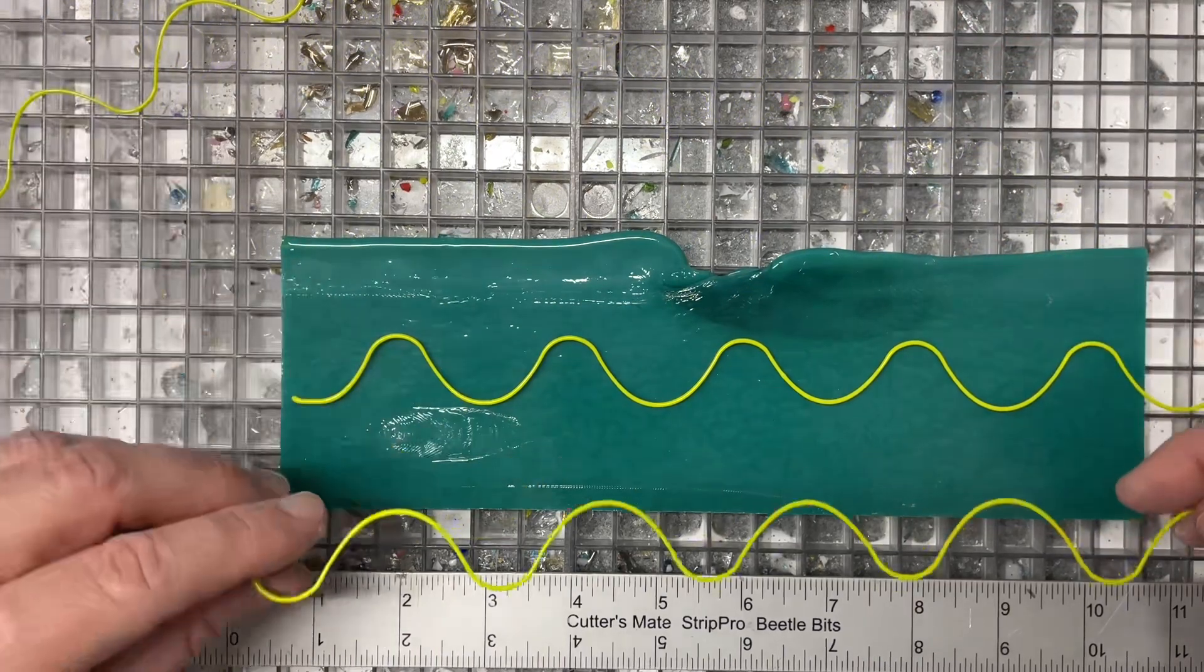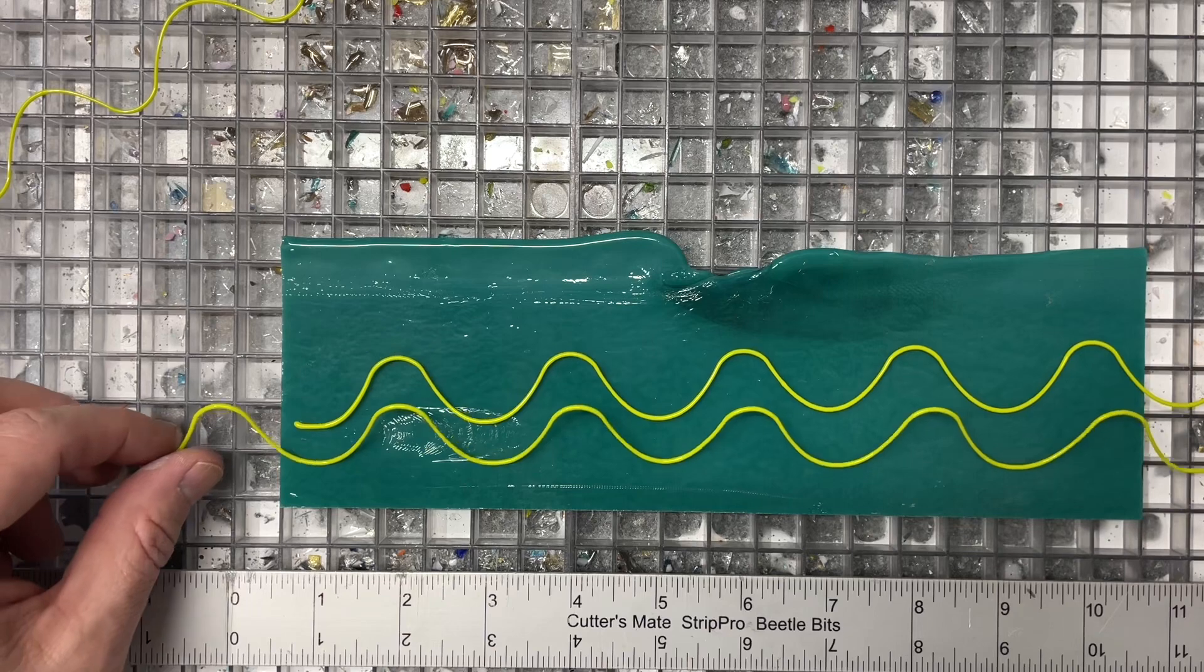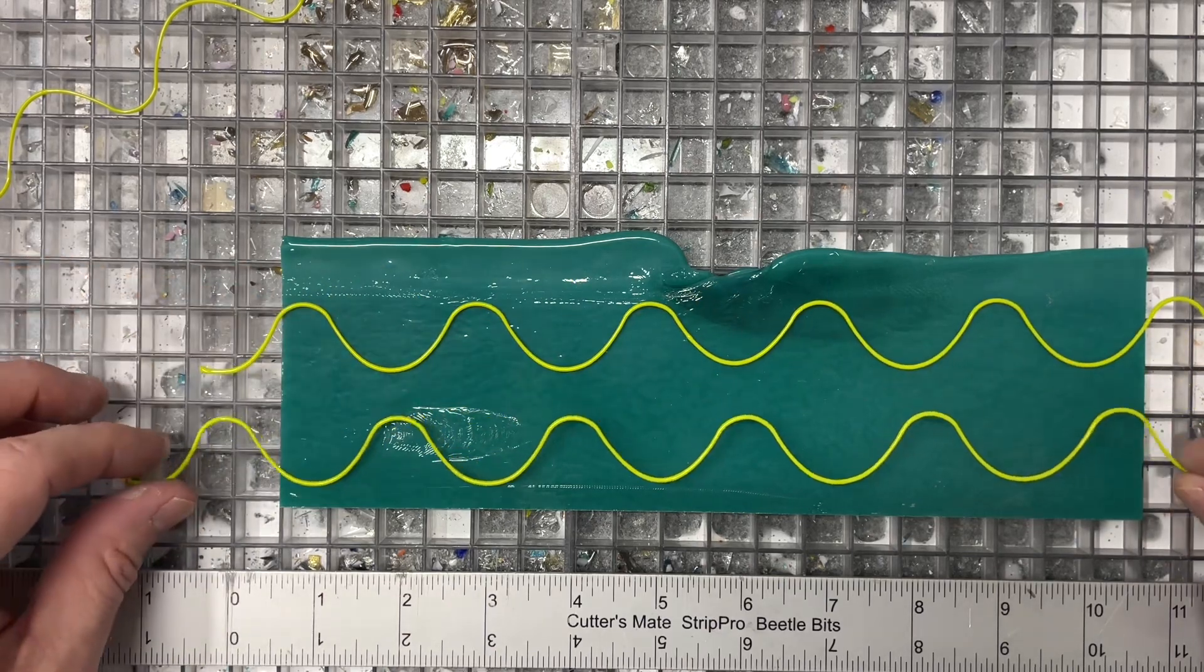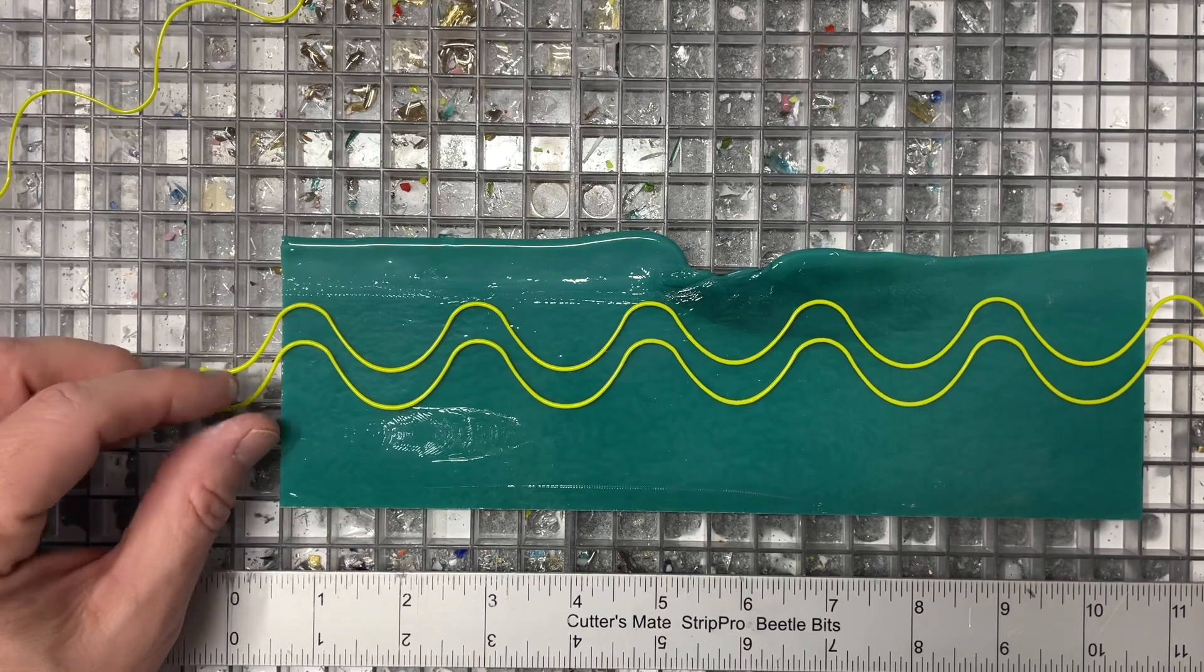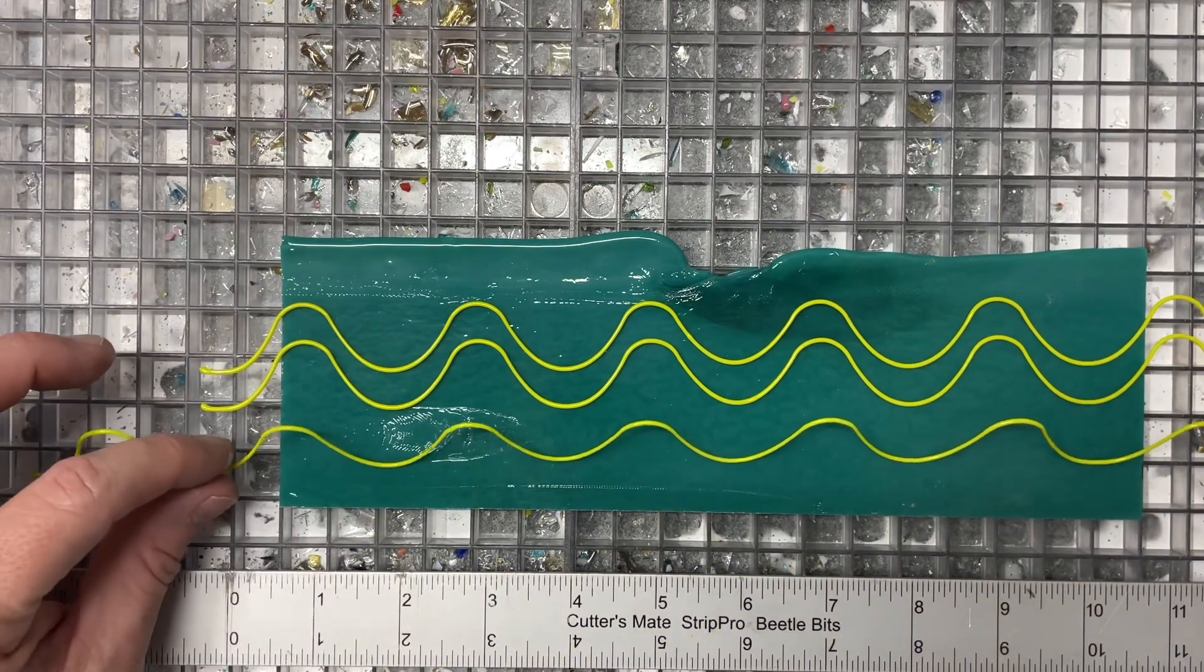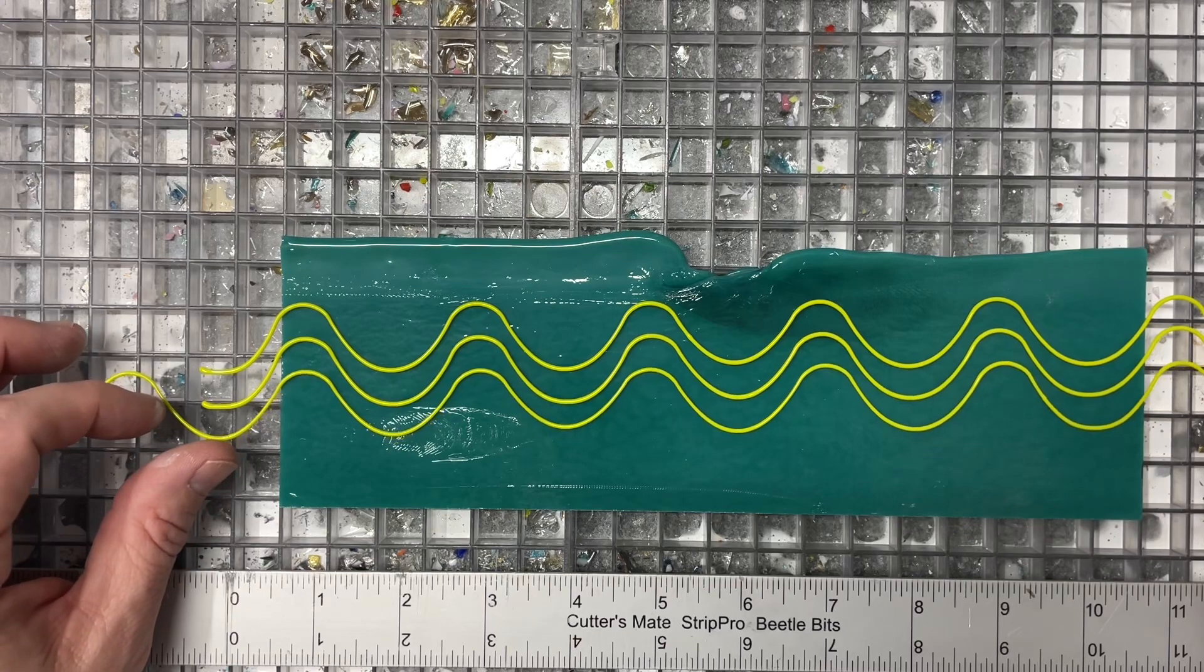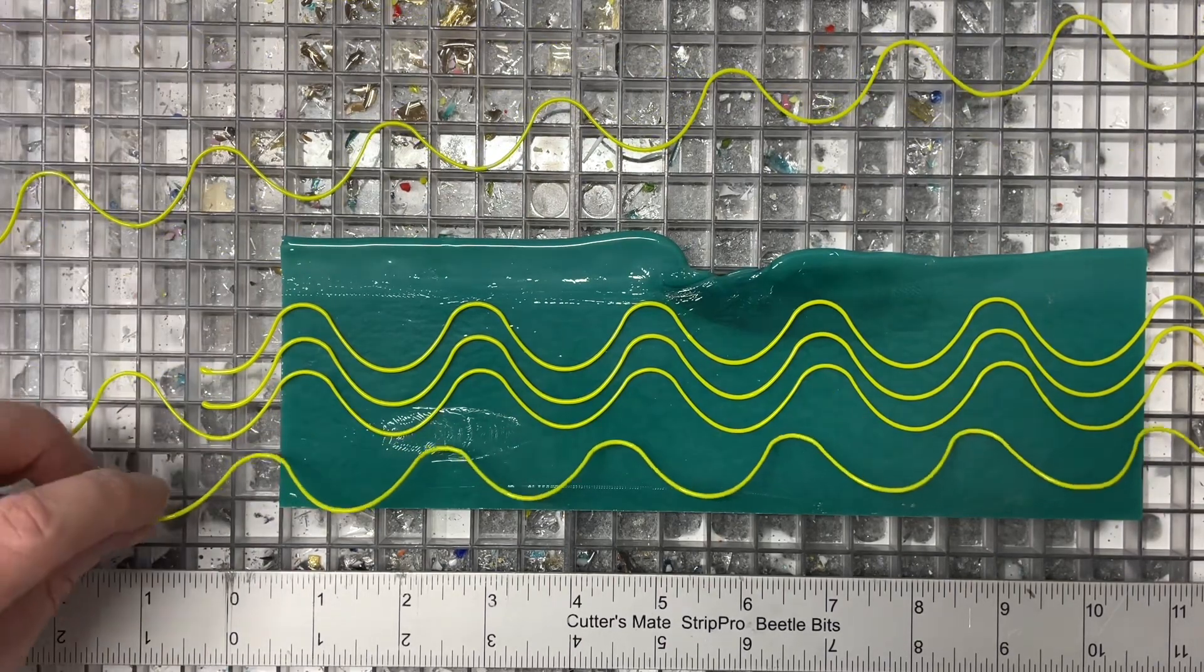This is this funky and fun spring green color. And so my intention here, I've got a contour fuse piece that's going in, and I think I'm going to do this in multiple firings. My intention is to create a funky, wavy, cool music staff, you know, five line music. Is that what it's called? It's a staff. It's been a long time since I've been in band.